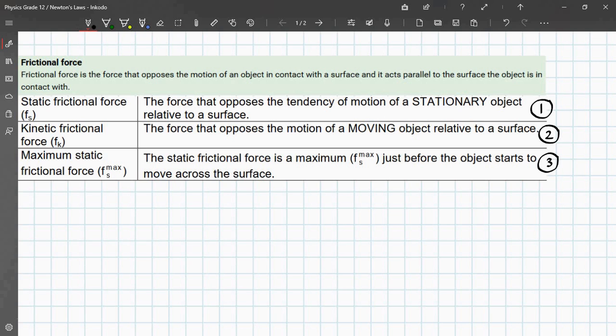So the next definition is frictional force. Frictional force is the force that opposes the motion of an object in contact with the surface, and it acts parallel to the surface of the object it is in contact with.